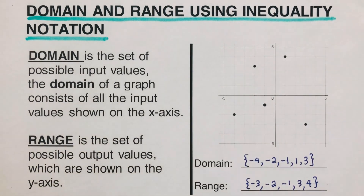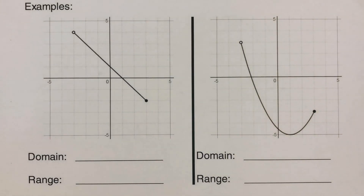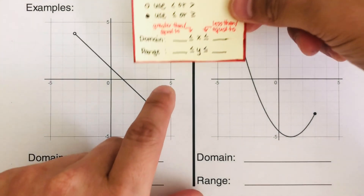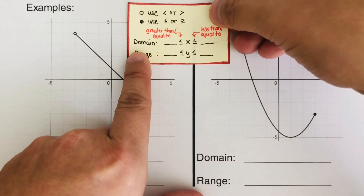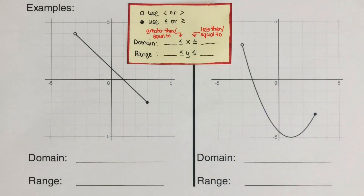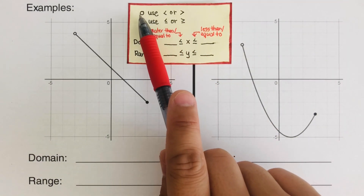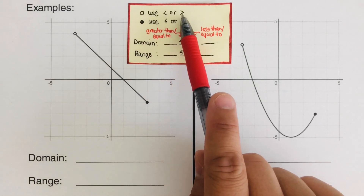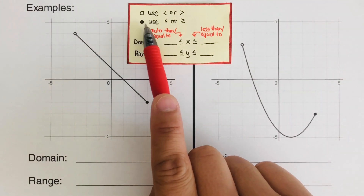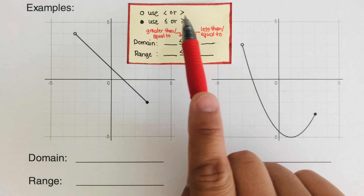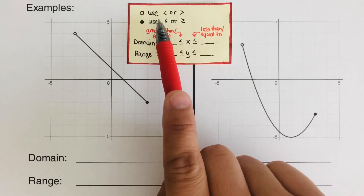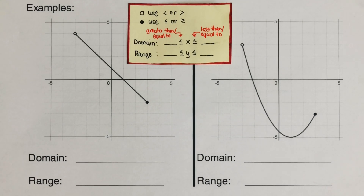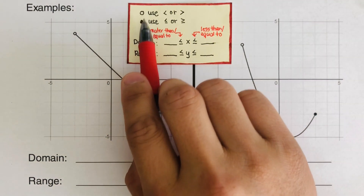Now let's move on to the next example. What happens if we have an open circle and a closed circle? We're going to use inequality notation to write the domain and range of this given graph. If we see an open circle, we use either less than or greater than depending on the problem. If we have a closed circle, we use less than or equal to. The difference is that an open circle means that number is not included, while a closed circle means it is included.